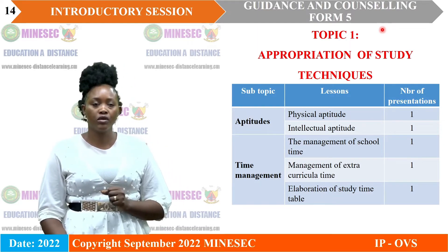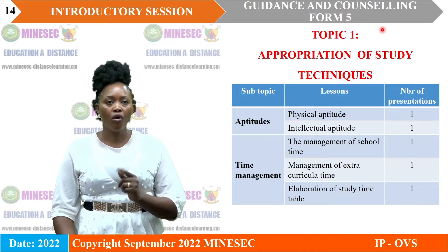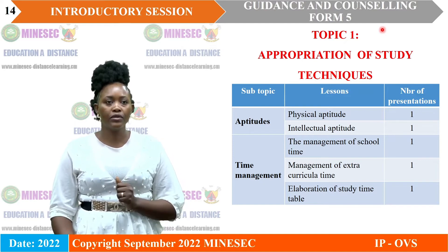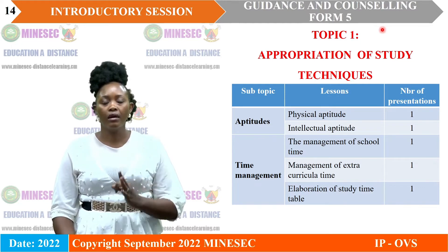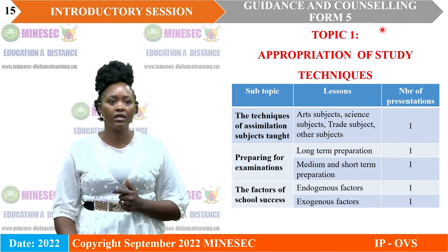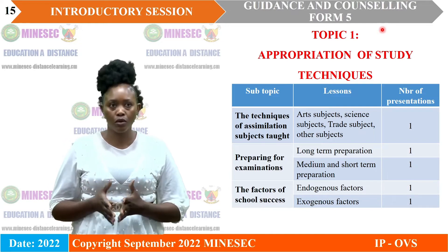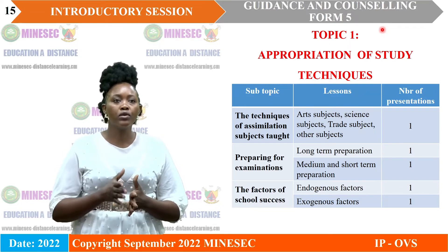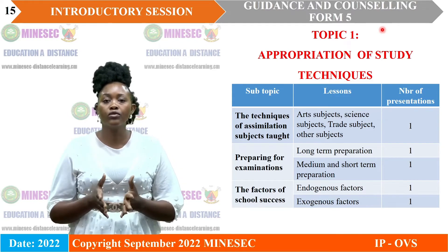Let us look at the general presentation of topic one, titled appropriation of study techniques. It has one subtopic which is aptitude, and aptitude has two lessons: physical aptitude and intellectual aptitude. The second subtopic is time management, which has three lessons: managing school time, managing extracurricular time, and elaborating a study timetable. The next subtopic is techniques of assimilating subjects' thoughts — you don't use one technique to teach science subjects and arts subjects alike. The lessons here cover how you study arts subjects, science subjects, and trade subjects.